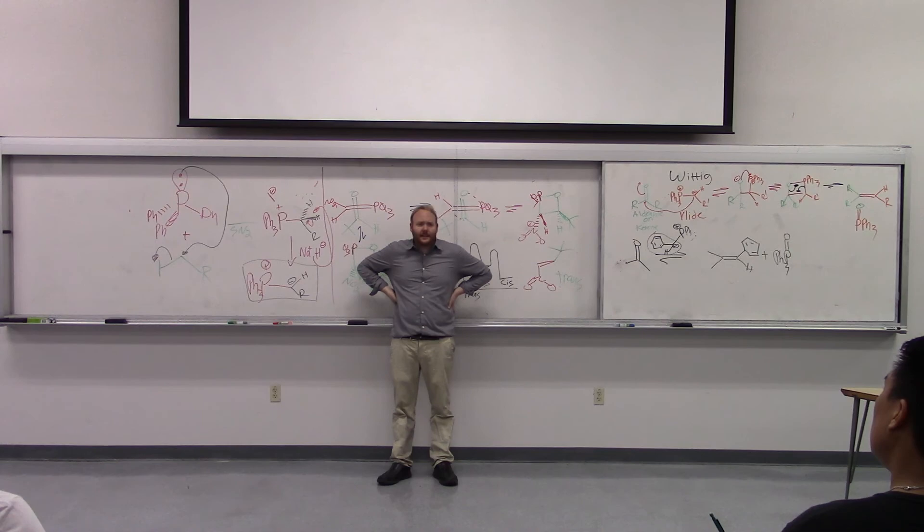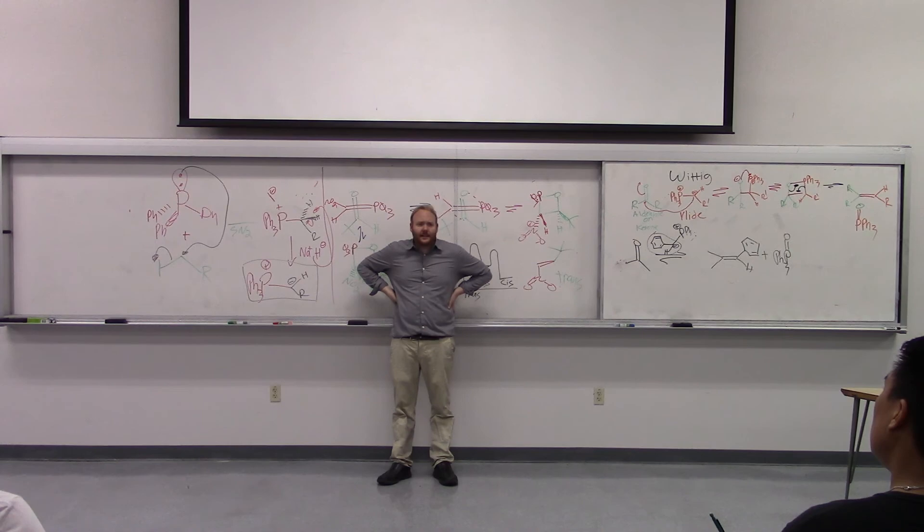So that's how you make ylides. You do an SN2 with a phosphine and an alkyl halide, and then you just throw in your base, butyllithium or sodium hydride. Sodium hydride is probably the safest to give you your ylide, and then you throw in your aldehyde and you get your Wittig. Anything in chapter 16 that I haven't covered I'm not going to go over because I don't think it's as important. I felt this really in-depth discussion of the Wittig was important to give you guys an idea of what's really going on.